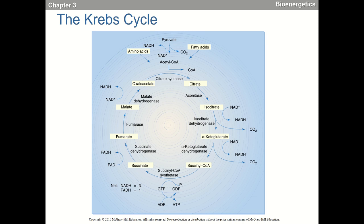Key enzymes: pyruvate to acetyl-CoA is catalyzed by pyruvate dehydrogenase — PDH. We're taking NAD and adding a hydrogen to it, so this is one of our electron carriers. Pyruvate dehydrogenase — PDH — gives us an NADH and produces acetyl-CoA from pyruvate.